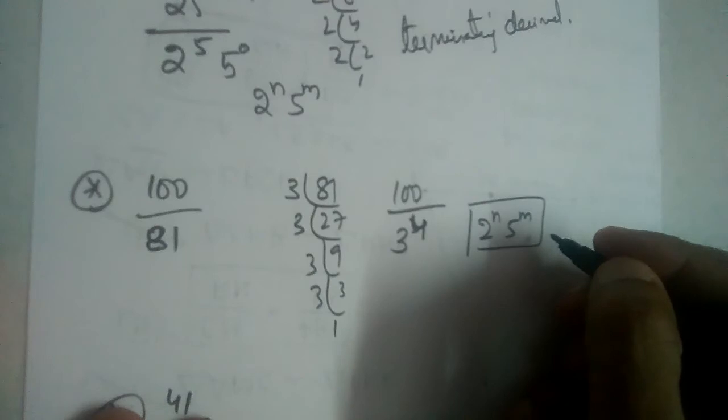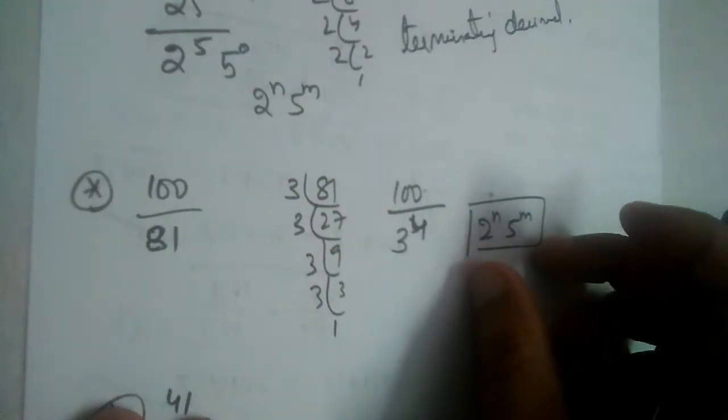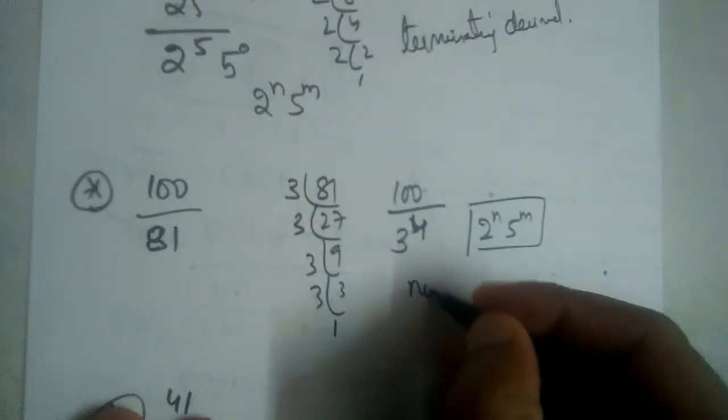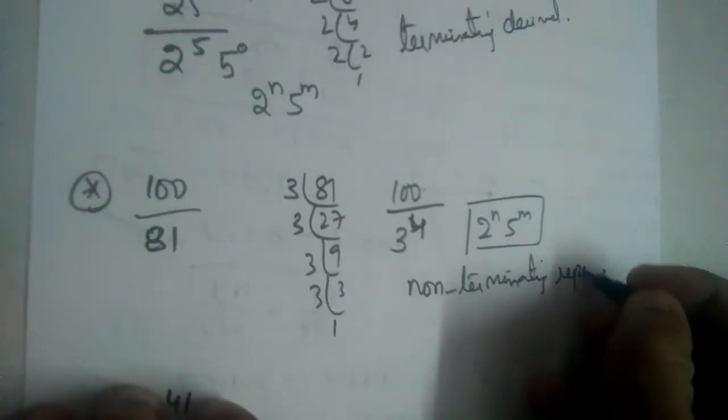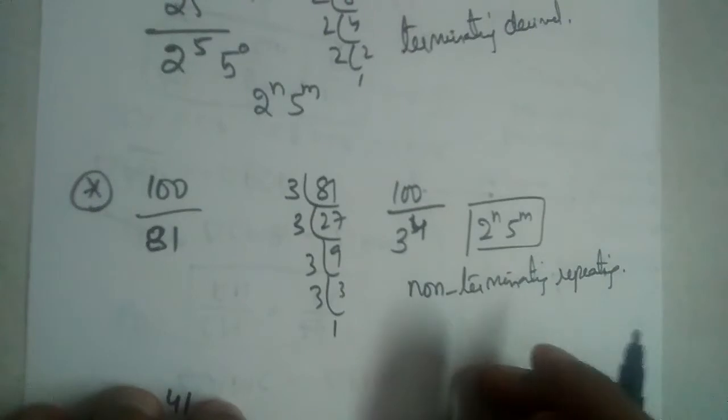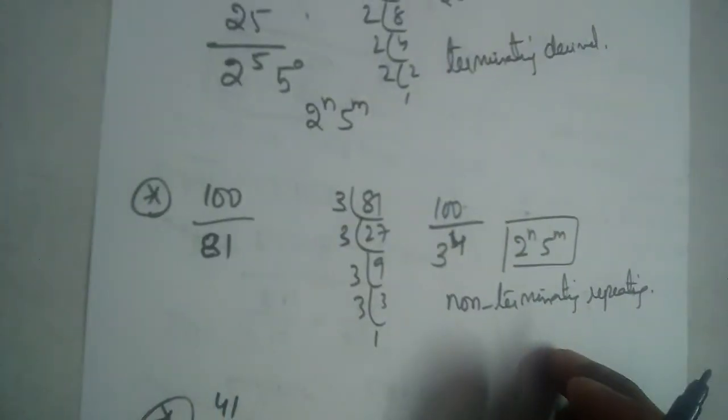We should have only 2 power n, 5 power m. If we have anything other than this, it will be non-terminating repeating. That's what we have studied in the previous two videos. If you did not watch those two videos, I recommend you go watch those two videos.